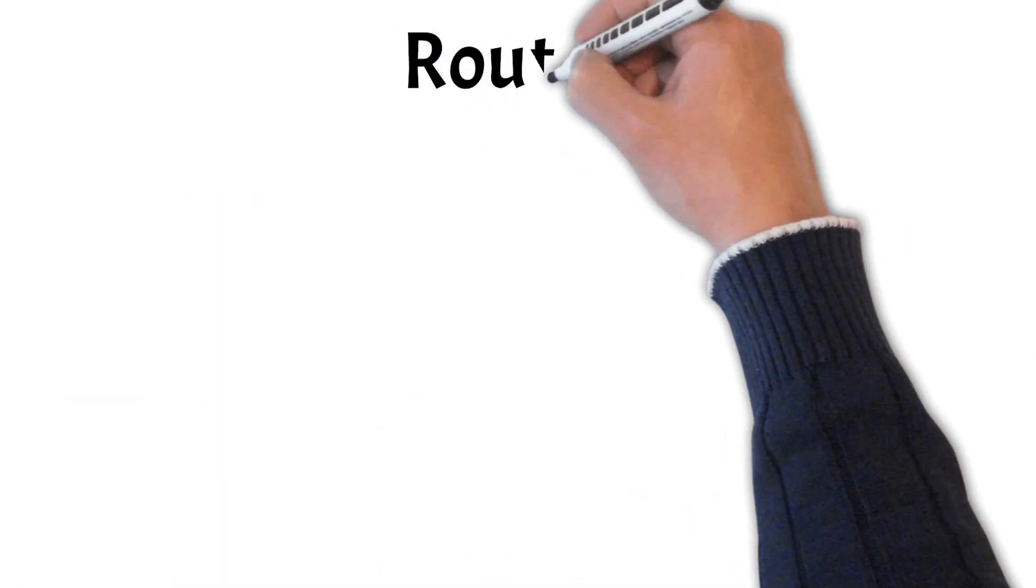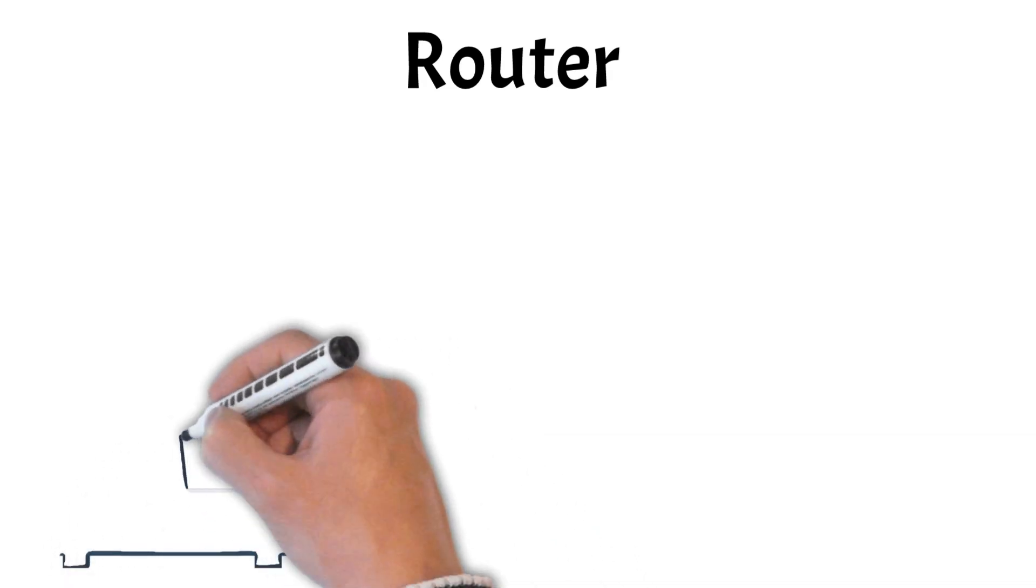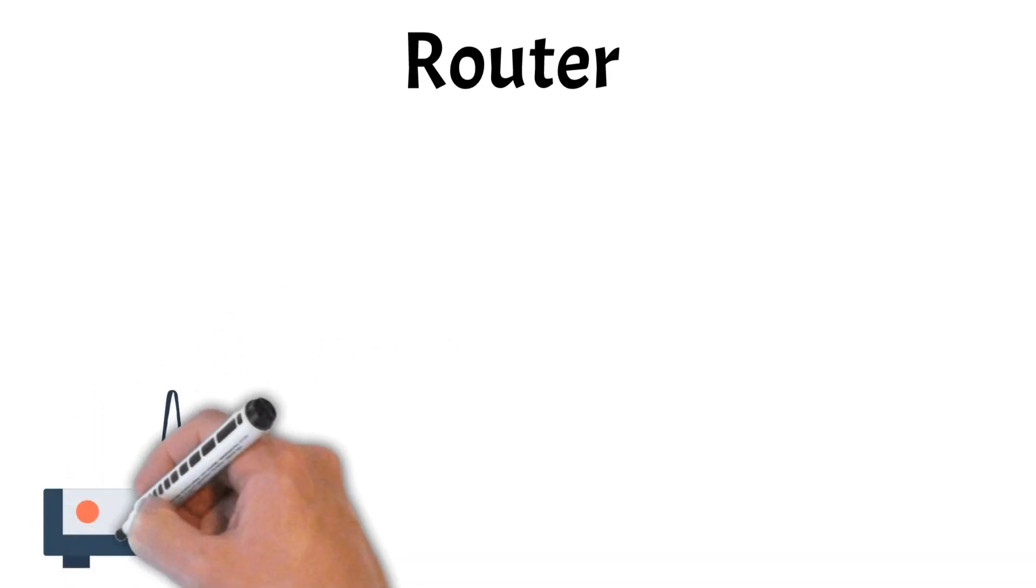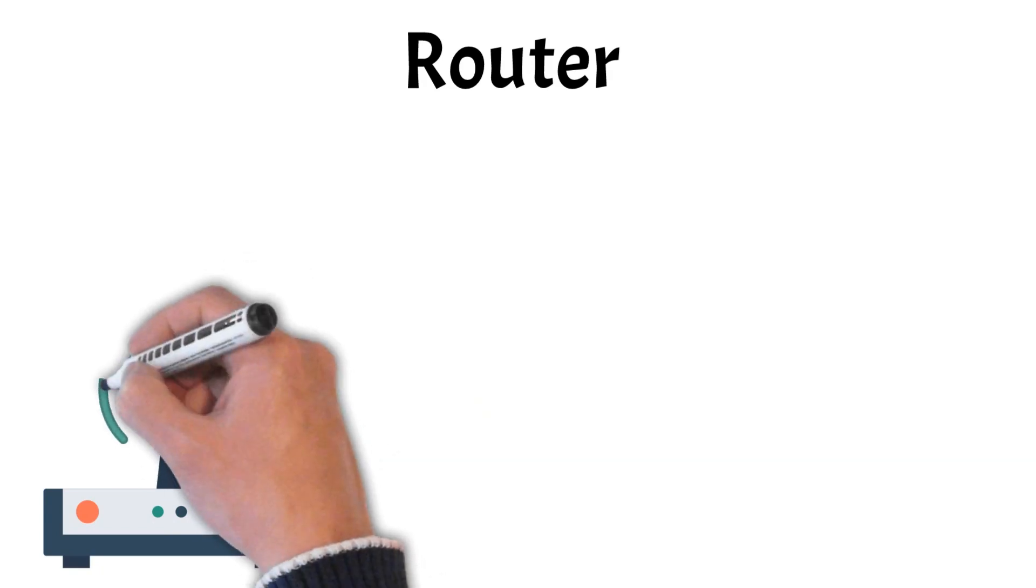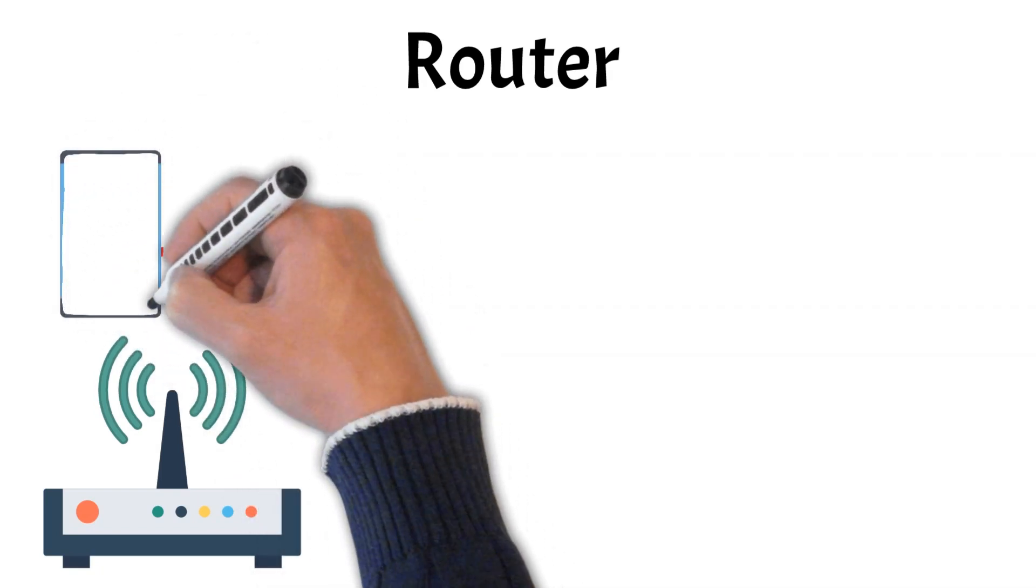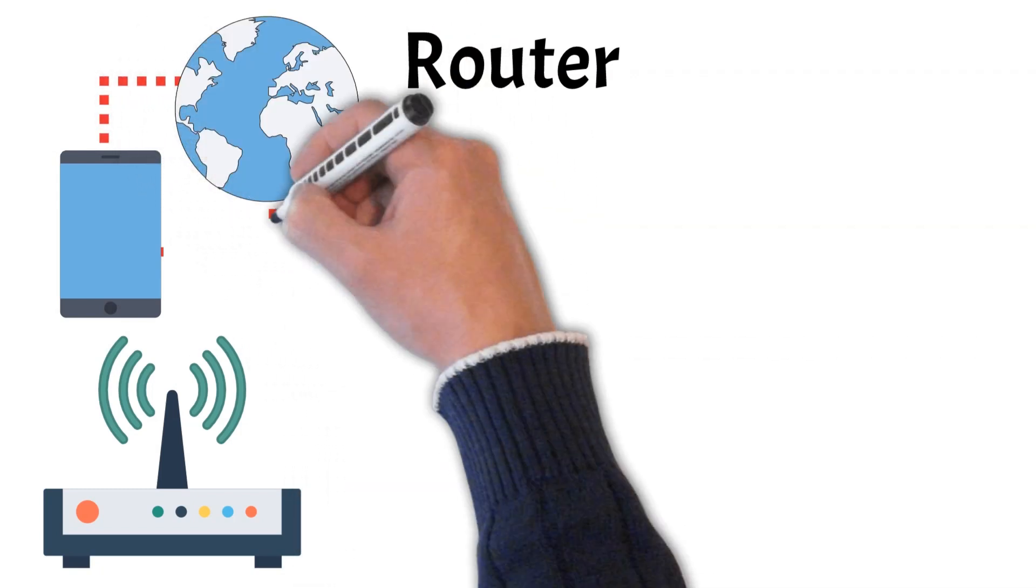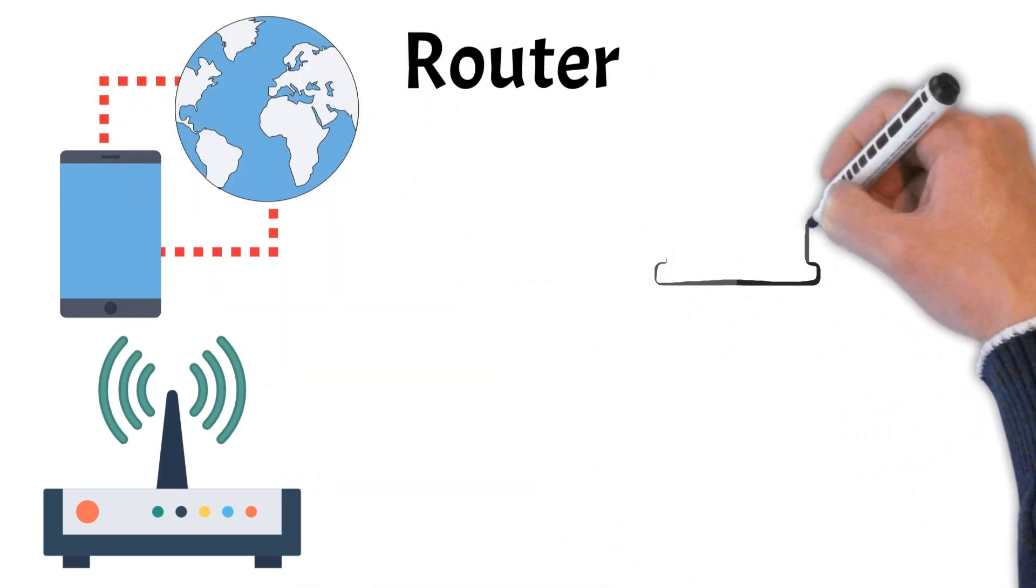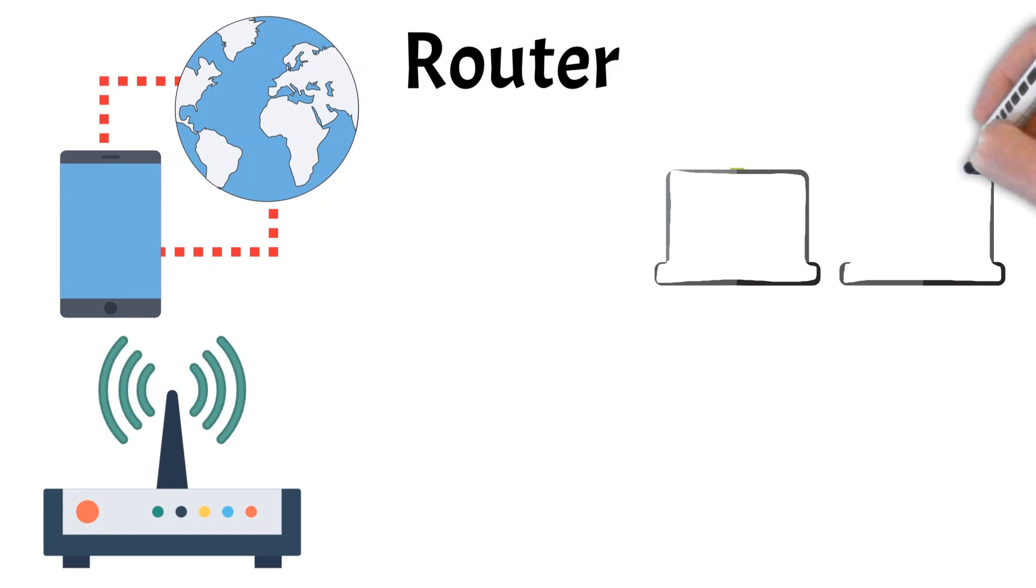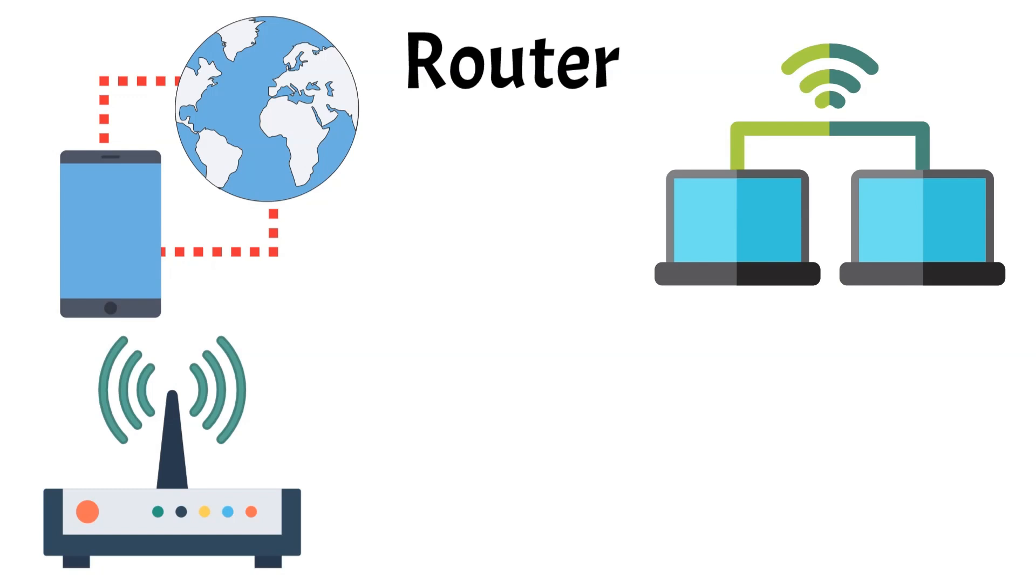First, let's analyze the key component in any network, the router. Routers are essential network devices that facilitate communication between different networks by directing data packets to their appropriate destinations. They operate at the network layer of the OSI model, making intelligent decisions about where to send data based on IP addresses. By connecting multiple devices within a local area network, LAN, and linking that LAN to the Internet, routers enable seamless data flow between devices.